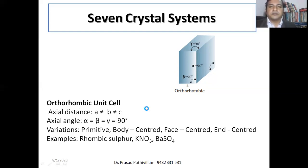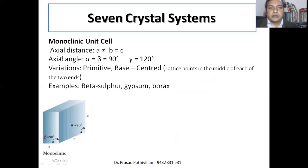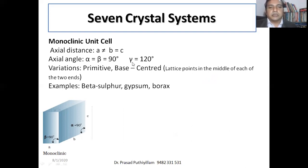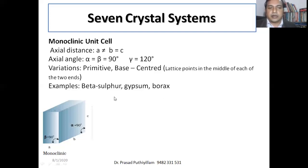Monoclinic unit cells: the axial distances are a ≠ b = c, so two are equal but the third is not. The axial angles are α = β = 90° whereas γ = 120°. There are two variations: primitive and base-centered. Examples include beta sulfur, gypsum, and borax.